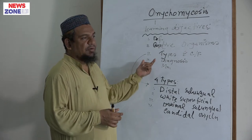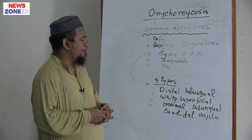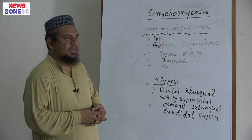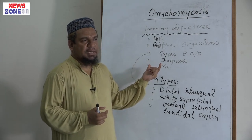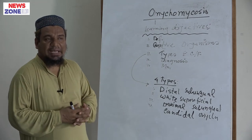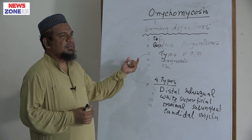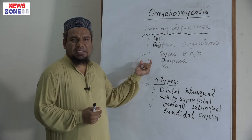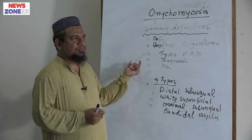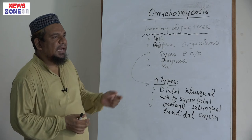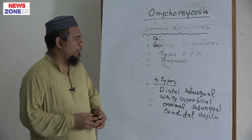How can we diagnose onychomycosis? In terms of diagnosis, clinical diagnosis comes first. Then in suspected cases, we collect nail clippings for fungal examination. We also do culture of the nail matrix or nail material on specific agar media. Rarely, we perform histopathology with PAS stain to identify the organism.